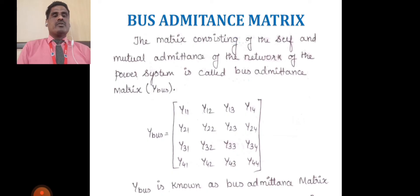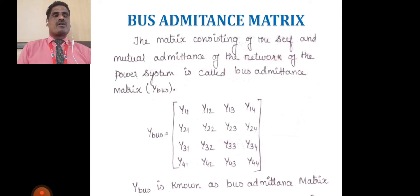So, the bus admittance matrix is nothing but the matrix consisting of the self and mutual admittance of the network of the power system, called a bus admittance matrix.